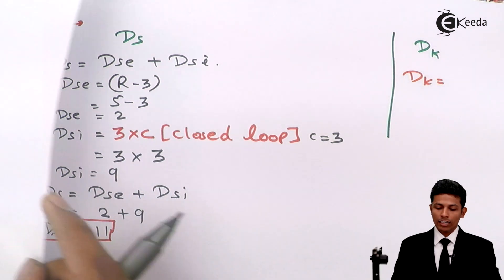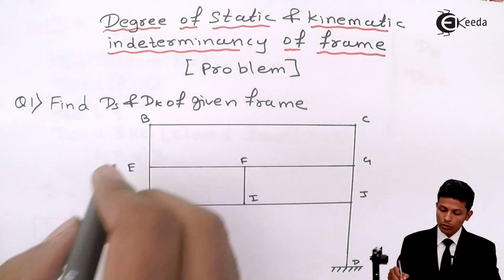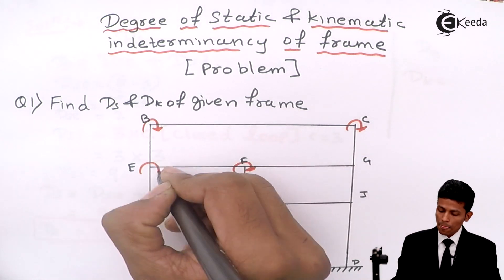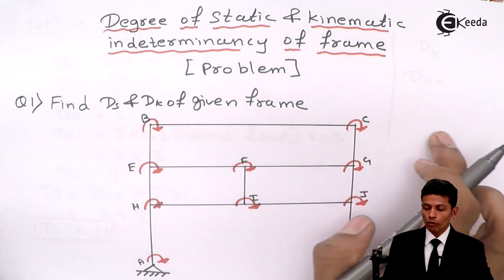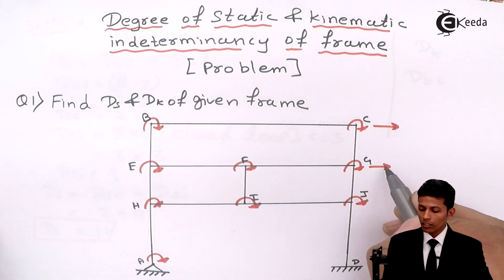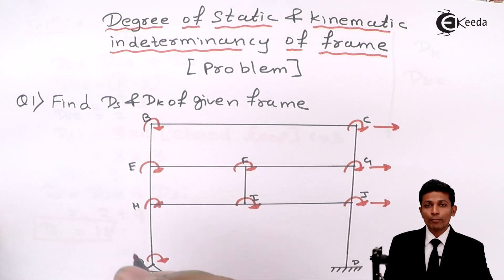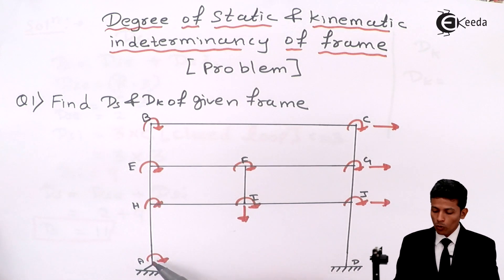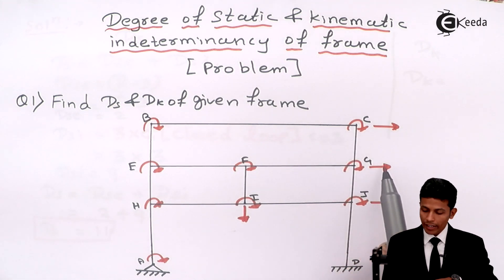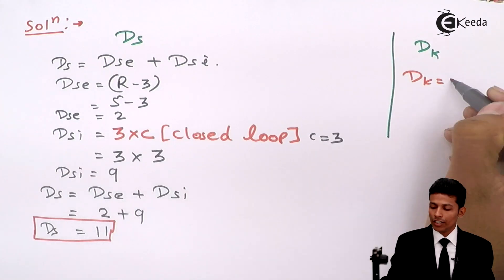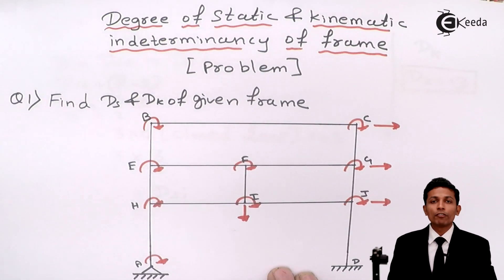For DK: the roller support contributes one degree, and all joints have moments. Since members BC can also move horizontally, those directions count too. There is no load on some members, so they also tend to bend downward, adding those degrees. Counting all: 1, 2, 3 ... up to 13. DK = 13. We are done with problem number one.